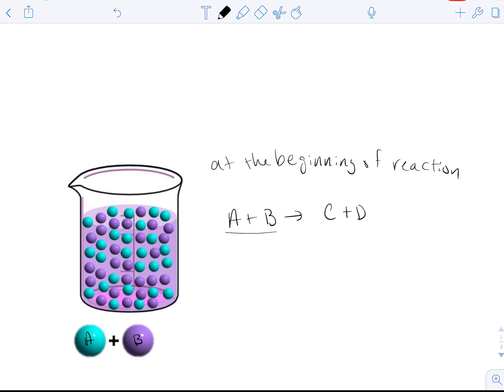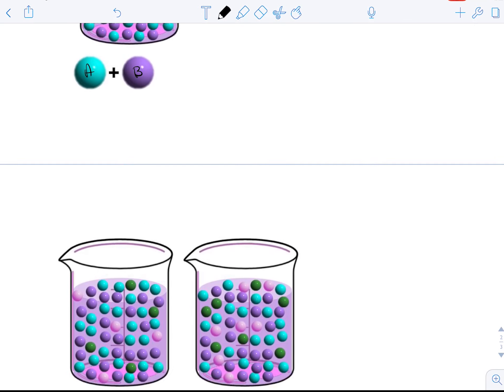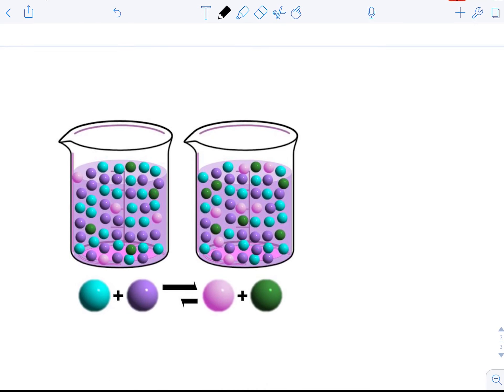So as A plus B come together, they're going to react to produce C plus D. So at the very beginning, all we have is A and B. So we would say that there's lots of molecules of A and B reacting. And once we have an effective collision, A and B will turn into some particles of C and D. So we'll have A and B going to form C plus D. Now, one-way arrow would indicate that we have a forward reaction.